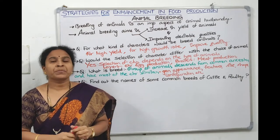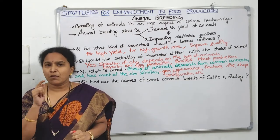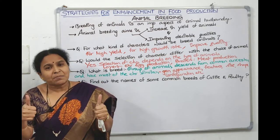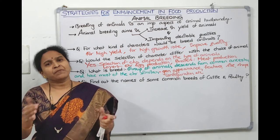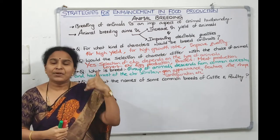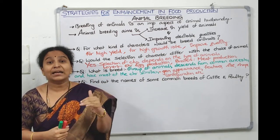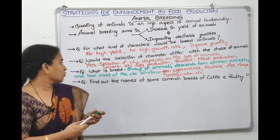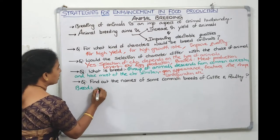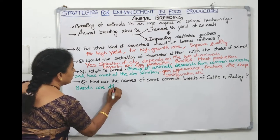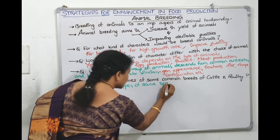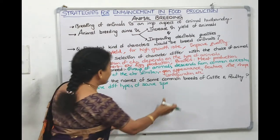To differentiate a breed from a species: breeds are different types within the same species. Within cows, within buffaloes, within chickens, we have different breeds. So breeds are different types of the same species — that is the key difference between a breed and a species.